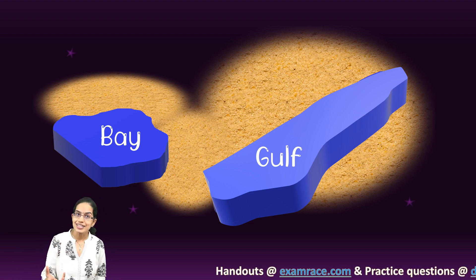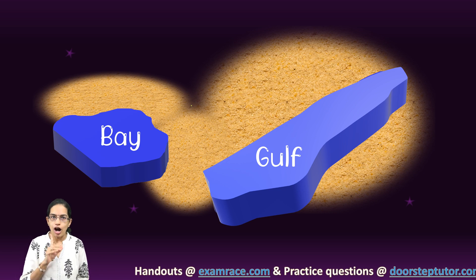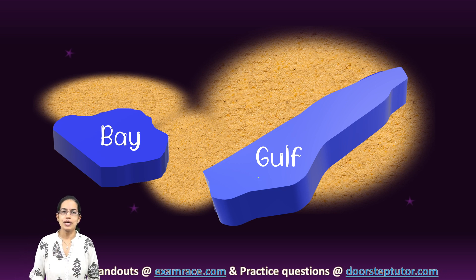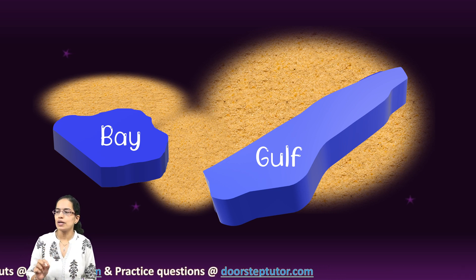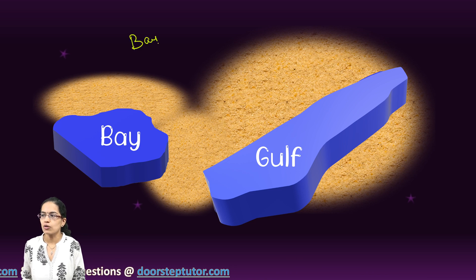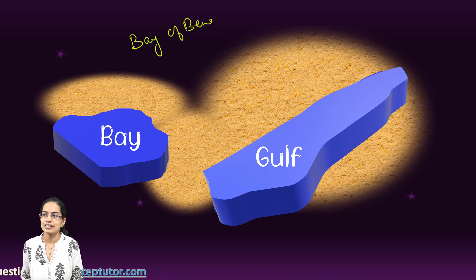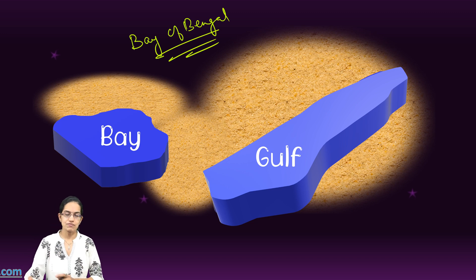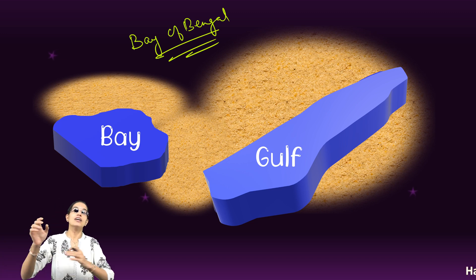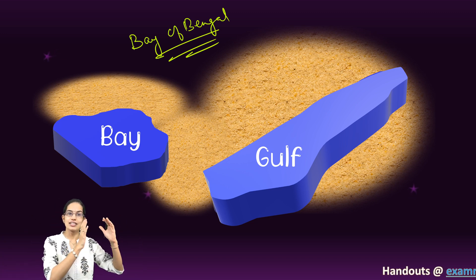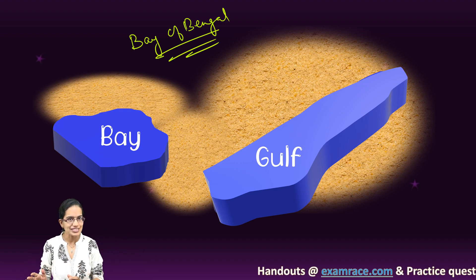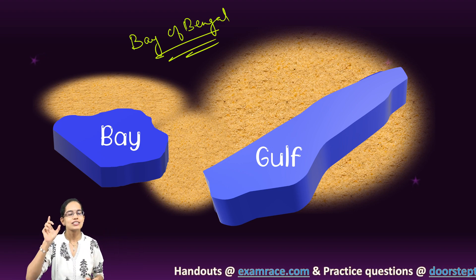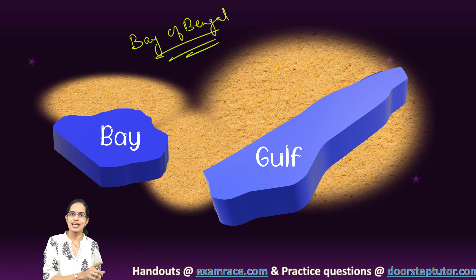Bay is smaller than Gulf. A simple way to remember is Bay of Bengal — it appears so big and it's an exception. Don't get confused here. Don't consider the example of Bay of Bengal to remember Bays. Bays are usually smaller than Gulf.